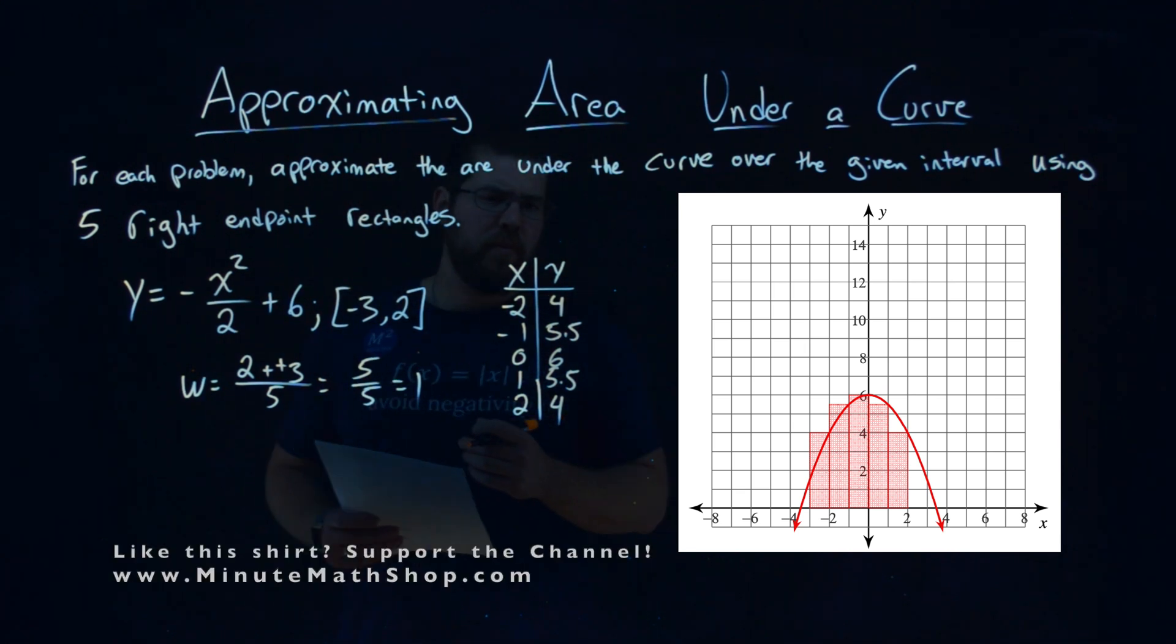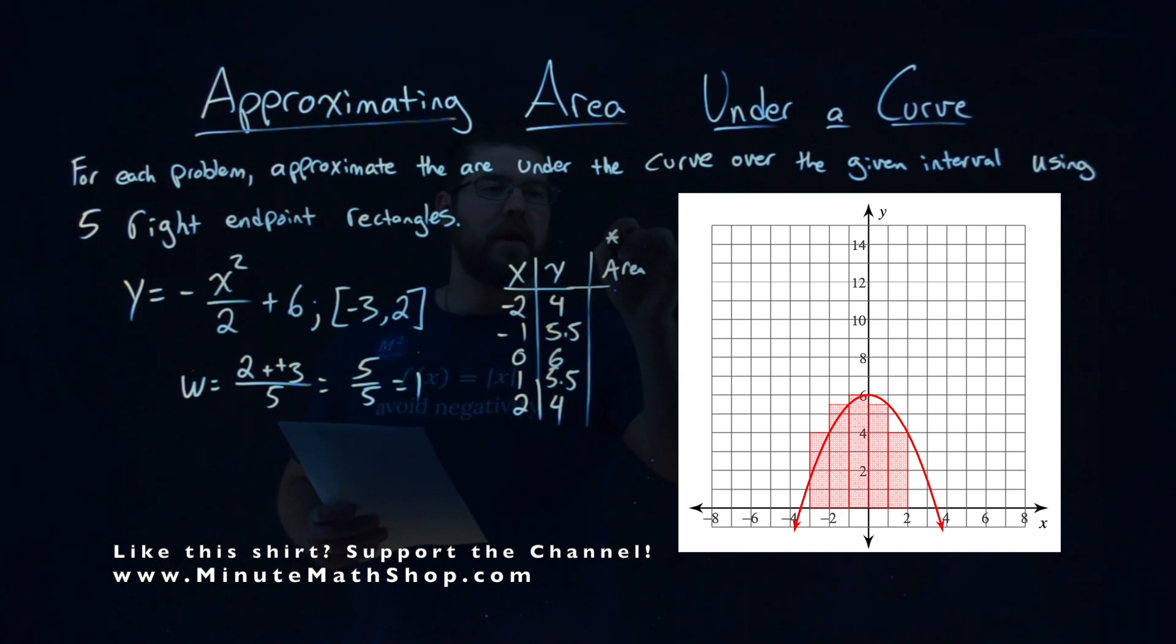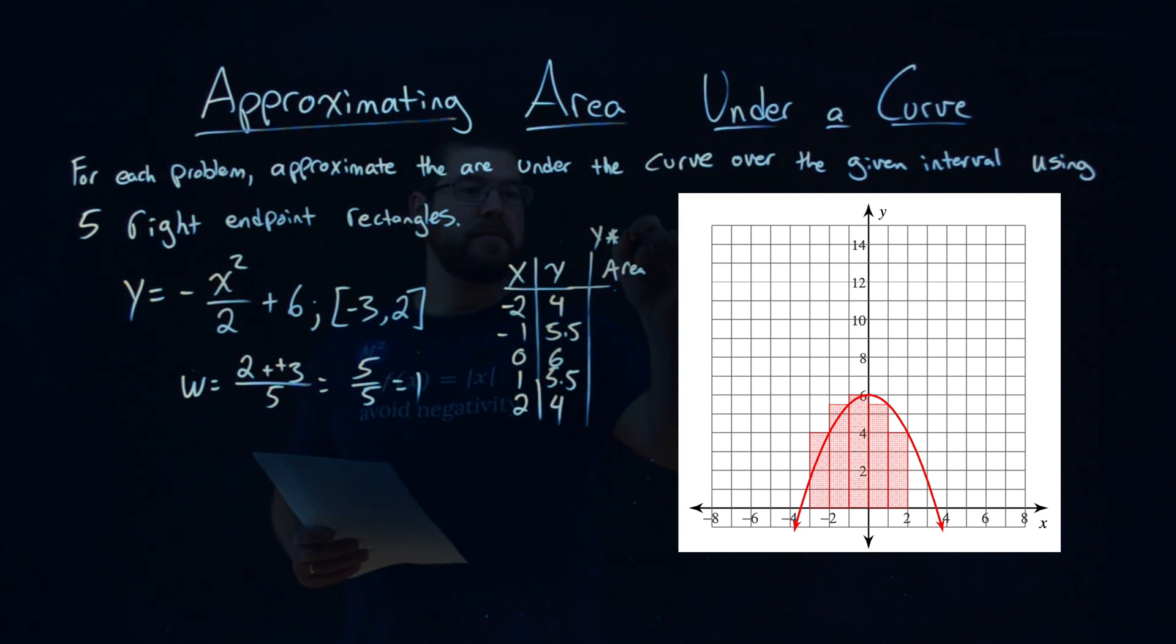And now, with that, we have the height of the rectangle. To find the area of each rectangle, we only need width times height. So to find the area here, we multiply the y value by the width, which is 1. Well, that just gives us the same y value, right?